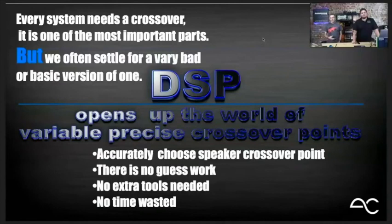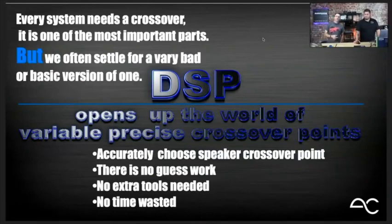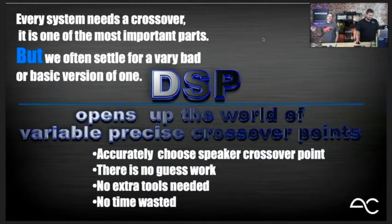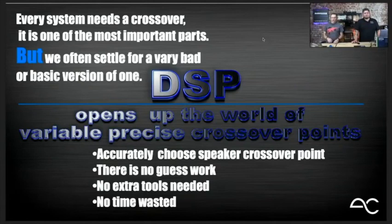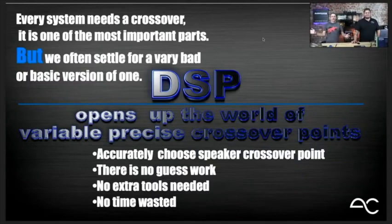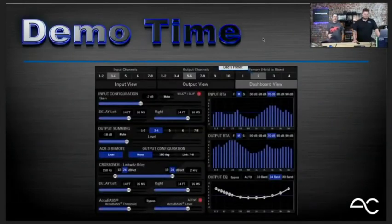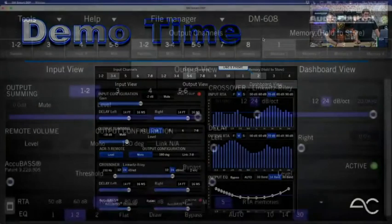DSP opens up the world of variable precision crossover points. Accurately choose speaker crossover points — if that speaker needs 2300 Hz, type it in and it's there. If you want to cross over your mid-range at 2523 Hz, go for it. There is no guesswork; if you've typed it in, that's what it is. No extra tools needed — you've done the math, you type it in, and you're done. Very, very simple.